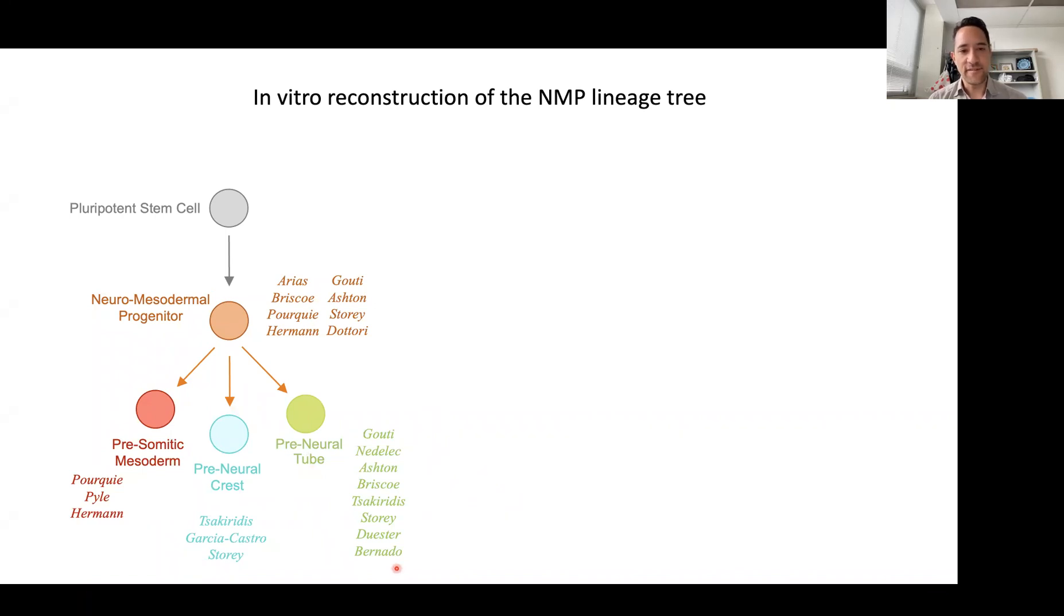But what Eva and I noticed was that despite all of these protocols in the literature, there was no one unified protocol. By that, I mean a protocol where the NMPs that you derive have the capacity to generate all three of these lineages at high efficiency.